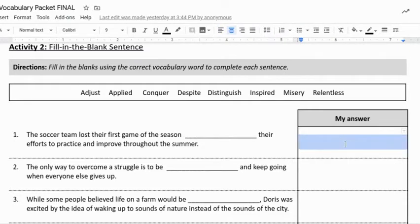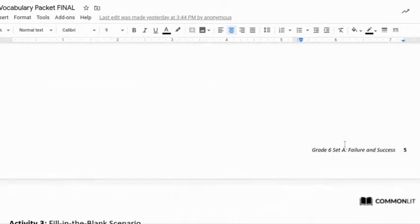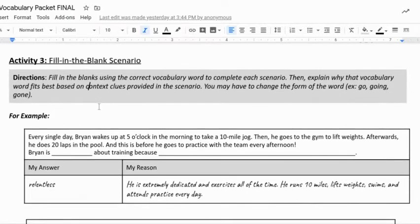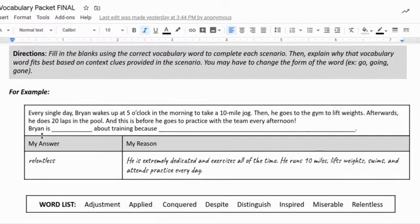All right, moving on. Activity number three. So this one is a fill in the blank with a scenario and an explanation required from you. It says here fill in the blanks using the correct vocabulary word to complete each scenario, then explain why that vocabulary word fits best based on context clues provided in the scenario. You may have to change the form of the word, so 'go,' 'going,' and 'gone,' to make it work.